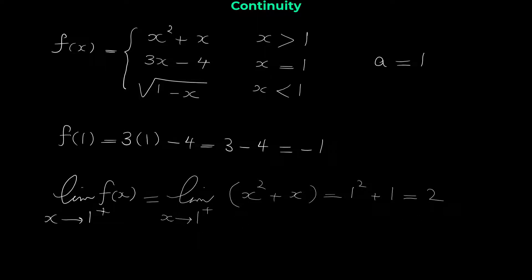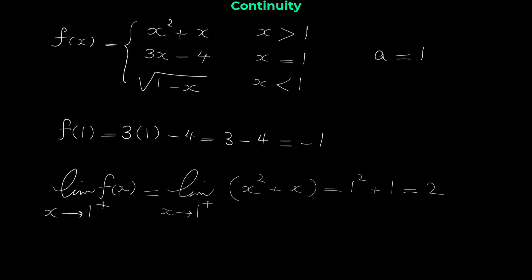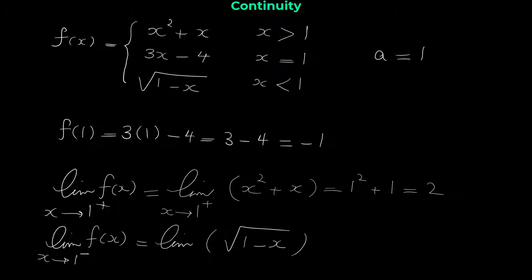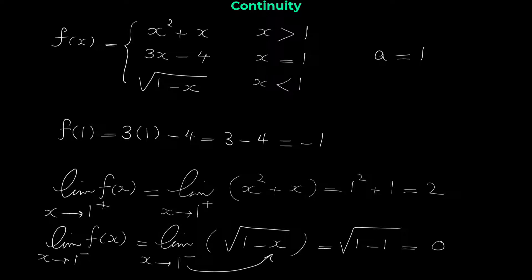Now we find the limit of f of x when x approaches 1 from the left. Since x is less than 1, we use the third rule: the square root of 1 minus x. Plugging in 1, we get the square root of 1 − 1 = 0. So the left limit equals 0.